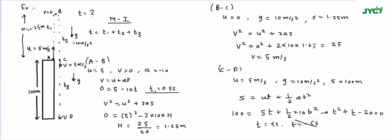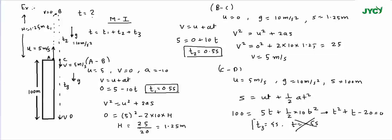Since t = −5 seconds is not valid, T3 = 4 seconds. Now for T2 (B to C): initial velocity is 0, final velocity is 5 meter per second, acceleration is 10 meter per second square. Using v = u + at: 5 = 0 + 10 × T2, so T2 = 0.5 seconds. Therefore: T1 = 0.5s, T2 = 0.5s, T3 = 4s. Total time = 0.5 + 0.5 + 4 = 5 seconds. The total time for the ball to reach the ground is 5 seconds.